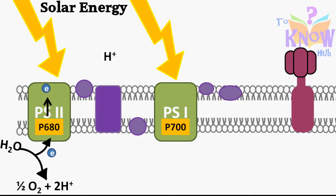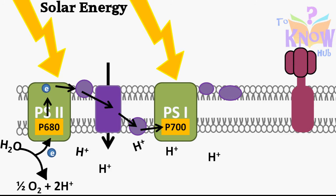The excited electron travels down from one electron carrier to another and keeps losing energy. Finally, it reaches photosystem 1. During this pathway, the released energy drives pumping of hydrogen ions to the thylakoid interior, that is the lumen. PS1 also absorbs solar energy, so the electron gets excited again. It is transferred to another electron carrier called ferredoxin.